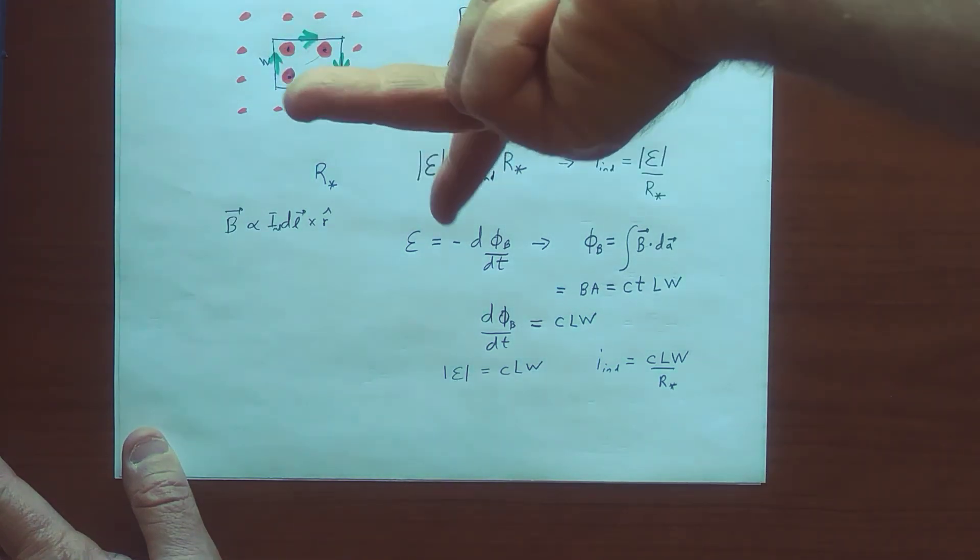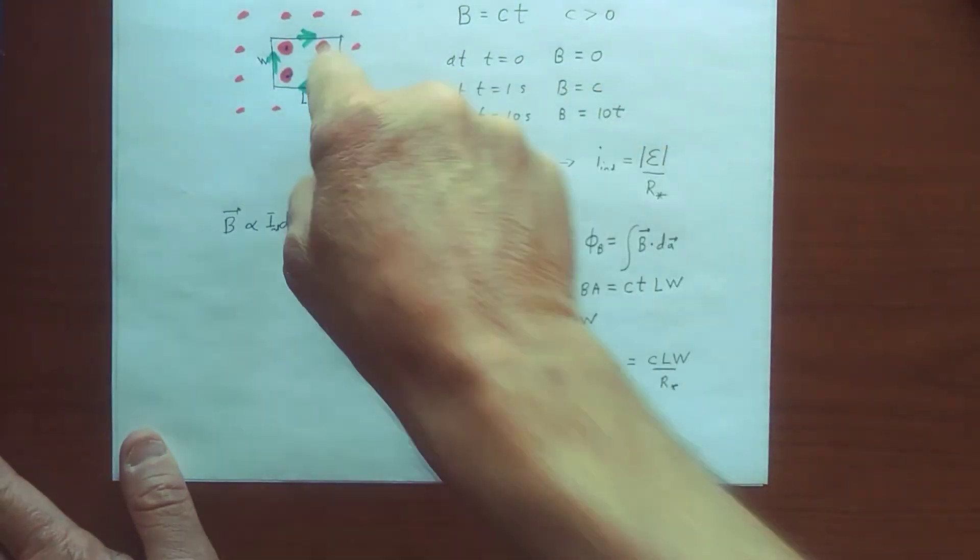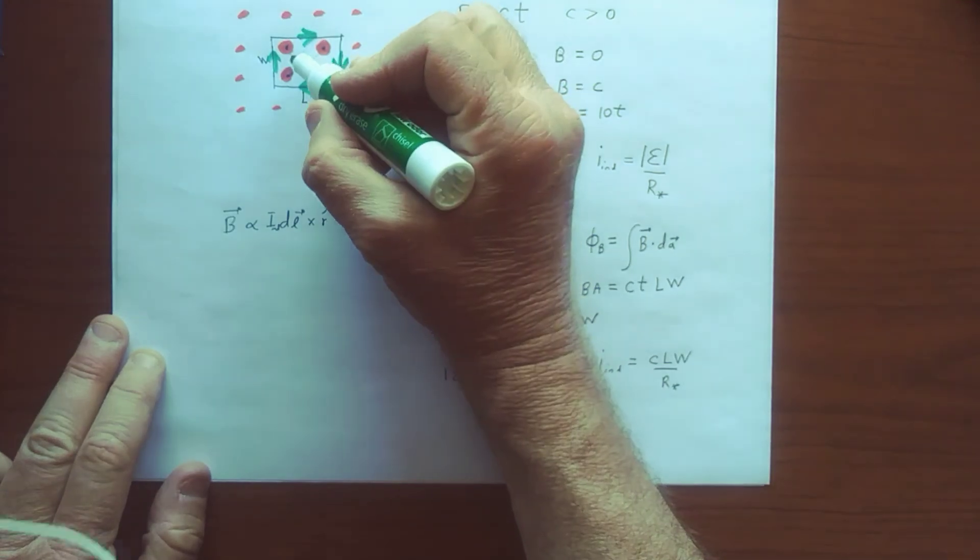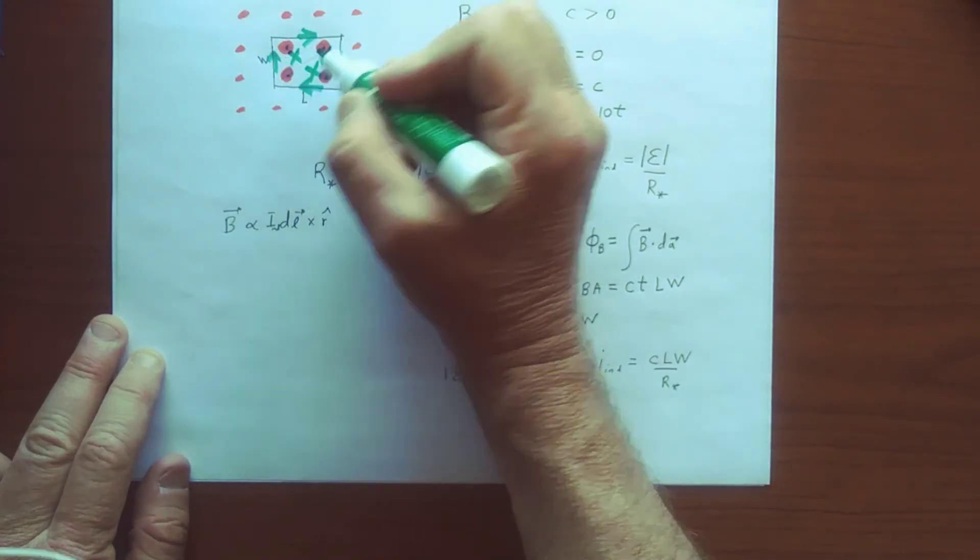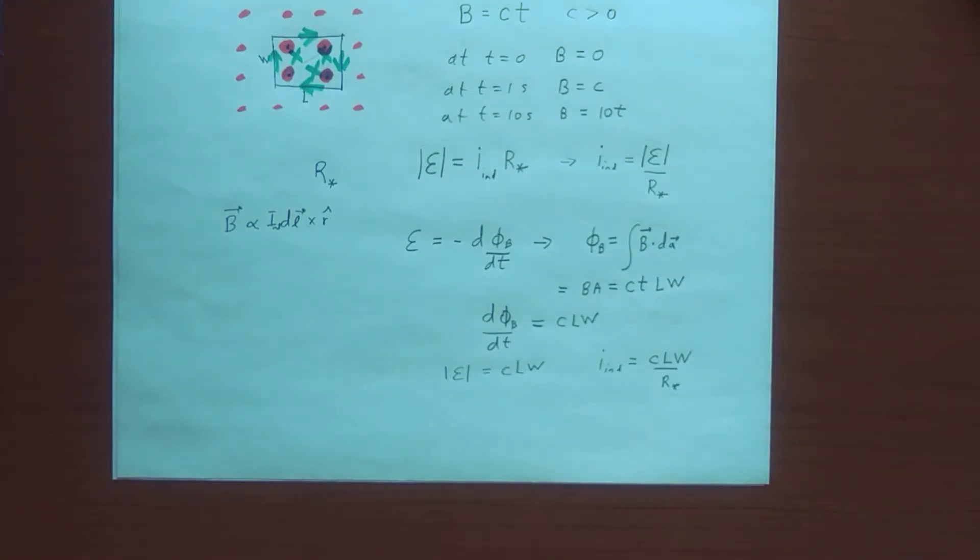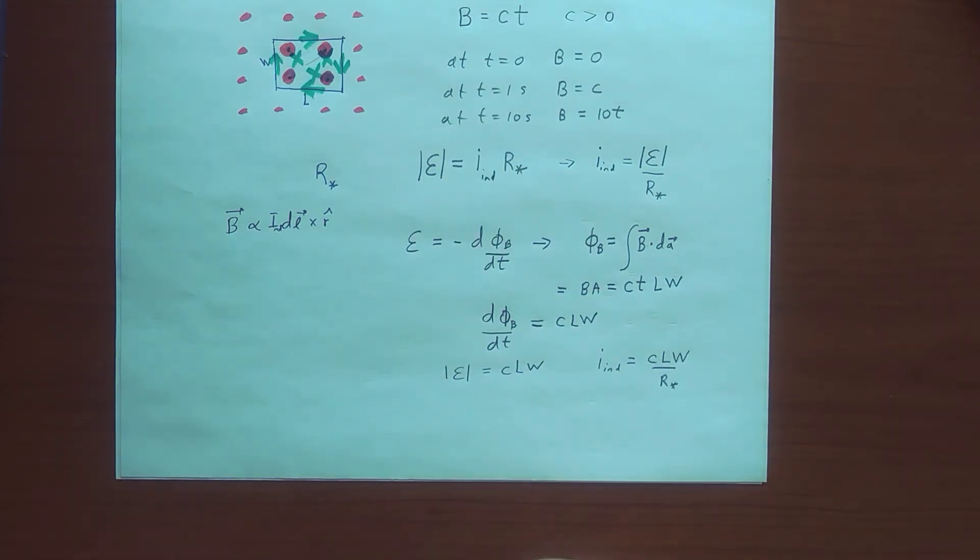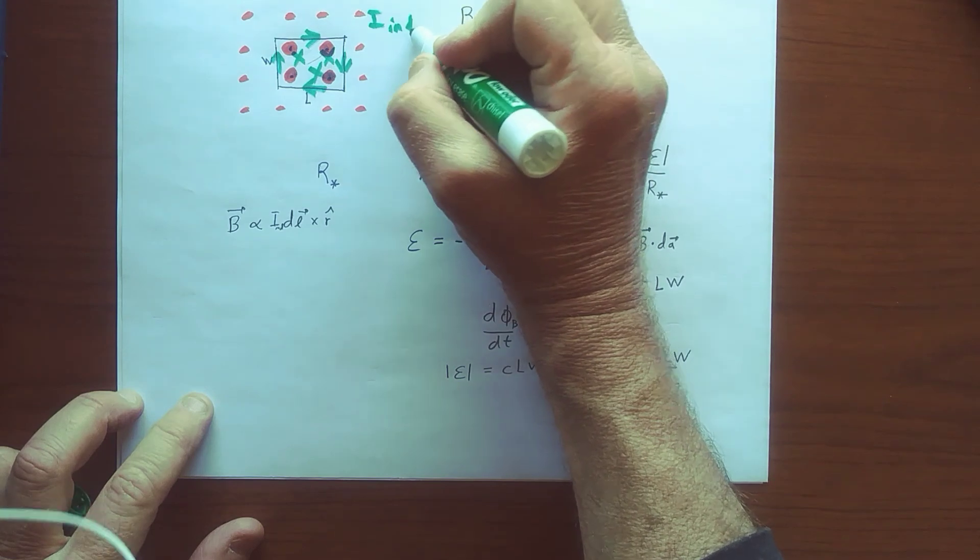the index finger is pointing this way, and we want the field here in this region. So my, it's R hat, my middle finger points inwards, and my thumb points in because we want the induced field to be pointing in, into the page to compensate for the fact that the red field is increasing out of the page. And so the induced current will flow clockwise, I induced.